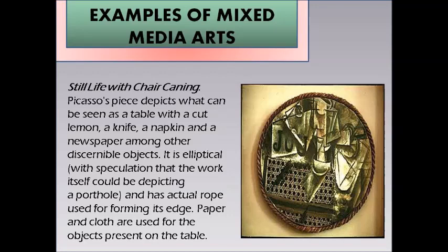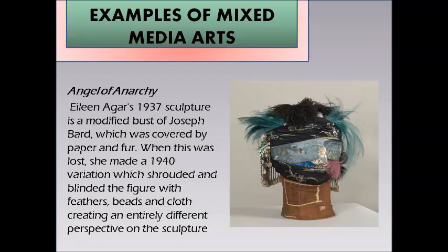Examples of mixed media arts include Still Life with Chair Caning — Picasso's piece depicting a table with a cut lemon, a knife, a napkin, and a newspaper. It is elliptical, possibly depicting a porthole, with actual rope forming its edge. We also have the Angel of Anarchy — Eileen Agar's 1937 sculpture, a modified bust covered with paper and fur. A 1940 variation shrouded and blinded the figure with feathers, beads, and cloth, creating an entirely different perspective on the sculpture.